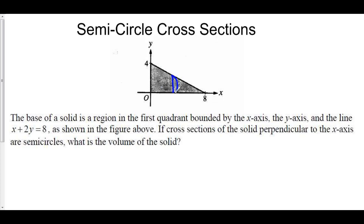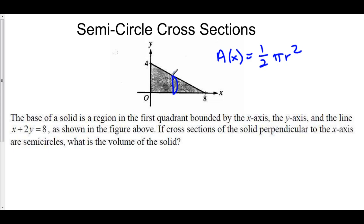We have semicircles extending on top of this region. The area of a semicircle is going to be one-half pi r squared. The area of a full circle is pi r squared, and a semicircle is half of the full circle, so that's the one-half in front. But we want our area to be in terms of x, not in terms of r.